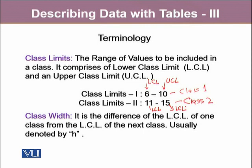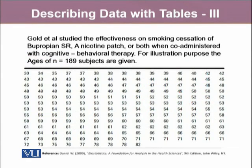The second concept is class width. It is the difference of the lower class limit of one class from the lower class limit of the next class, and it is usually denoted by H. We can note that H is the difference of two successive lower class limits or two successive upper class limits. In this case, 15 minus 10 gives the class width for these two classes.